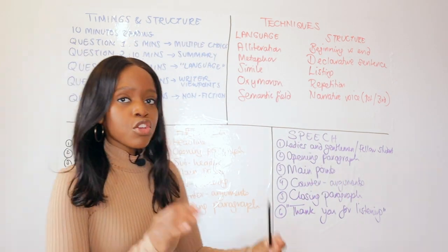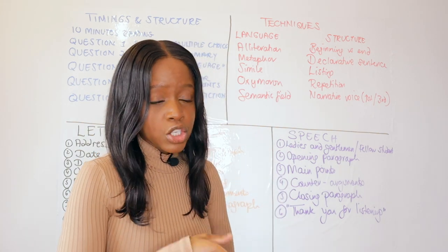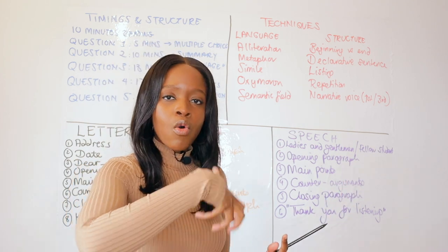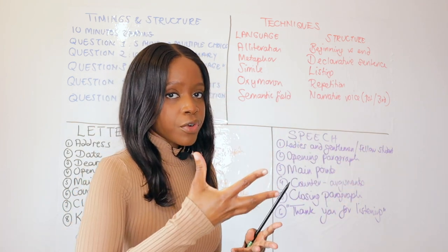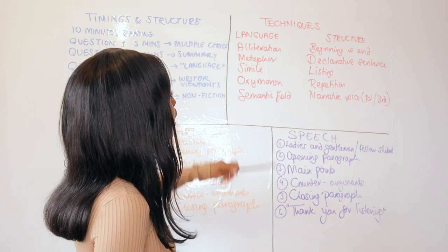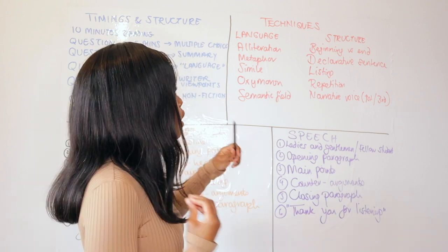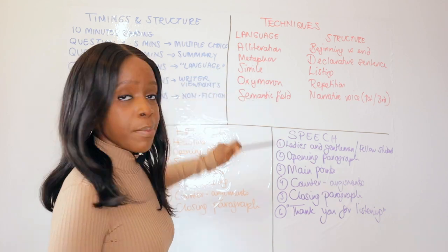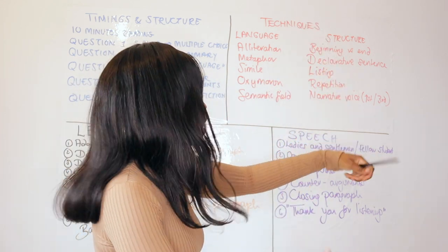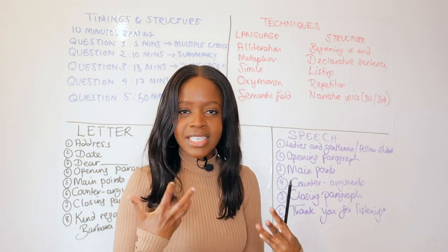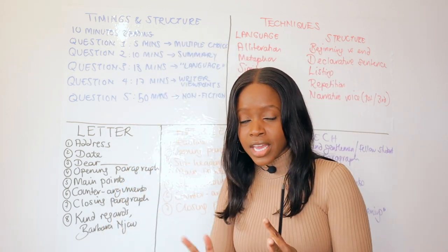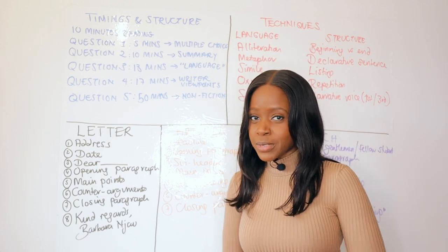The second step is being crystal clear on the difference between language and structure. This is important not only for Question 3 but also for Question 4. When picking out a quotation you need to show awareness of how the writer uses, for instance, a metaphor or a simple sentence. The language techniques guaranteed to come up are: alliteration, metaphor, simile, oxymoron, and semantic field. Structure, on the other hand, applies to beginning versus end, declarative sentences — which state a fact, feeling, or mood — listing, repetition, and narrative voice, such as first person or third person.